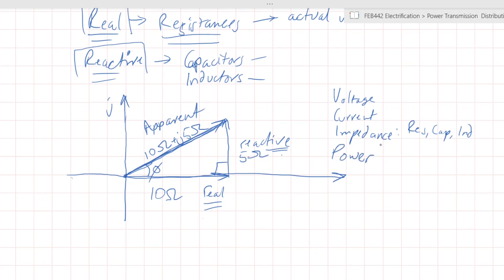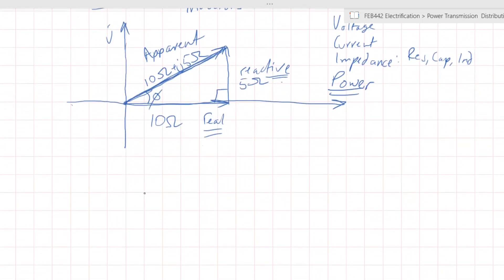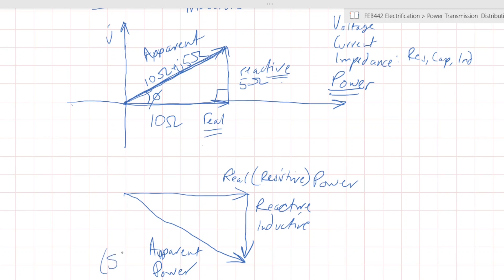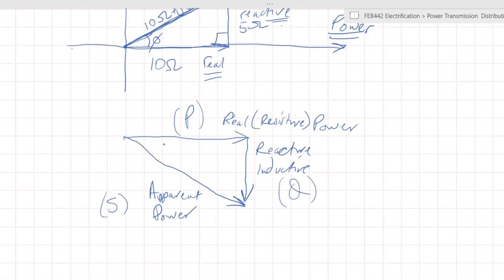This brings us back to the distribution system. In the case of power, you will have real power, you have reactive power, and the combination of the two will be your apparent power. So these are three different types of power. Apparent power is represented by S, real power by P, and reactive power by Q. And your phase angle phi is present in all of those.